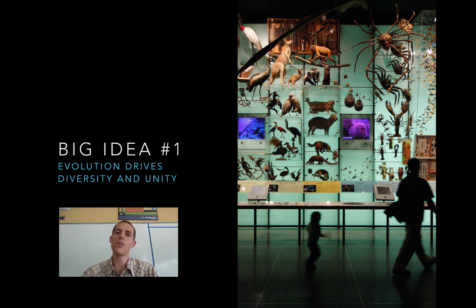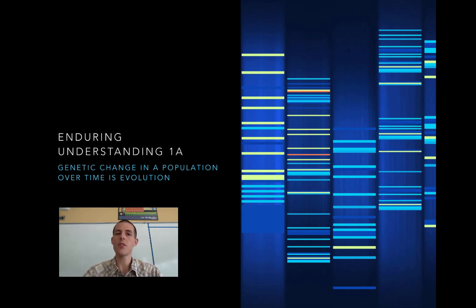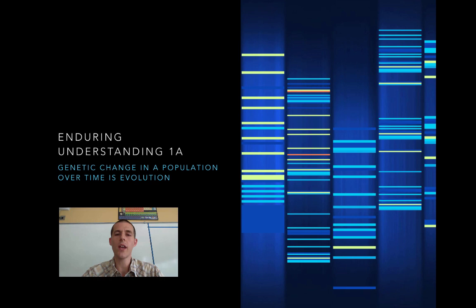Big ideas are broken down into enduring understandings, and for big idea number one there are four. The first is that genetic change in a population over time is evolution. We'll focus on changes in genotype — the genes of an organism. Looking at a population as a whole, evolution is a gene becoming more or less common in that population over time. For example, if blue eyes became more common in a population of people over time, that population is said to have evolved. Another major focus is that natural selection drives evolution by working on the phenotypes of organisms.